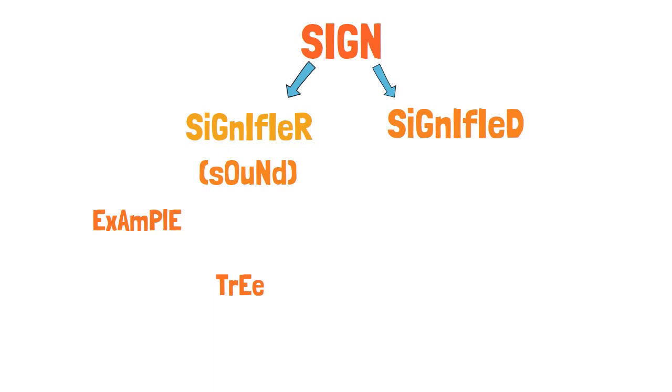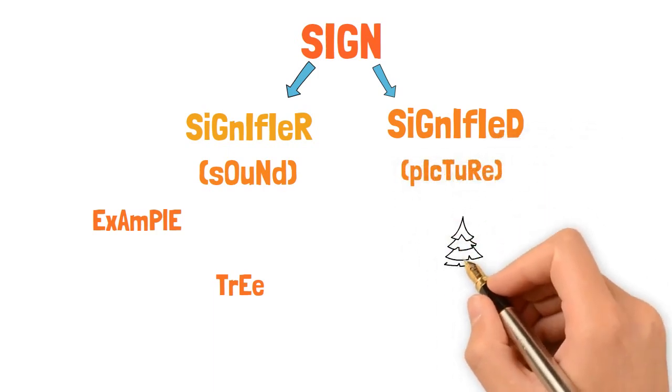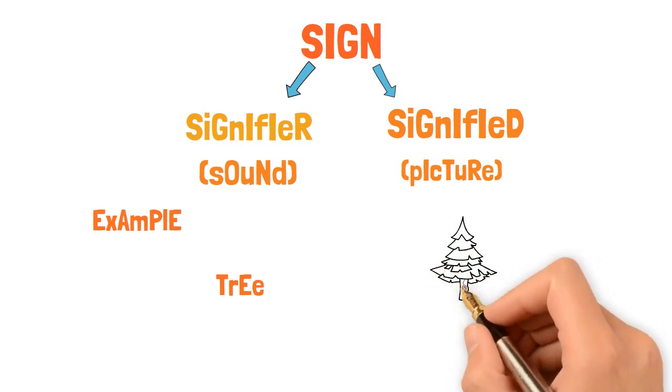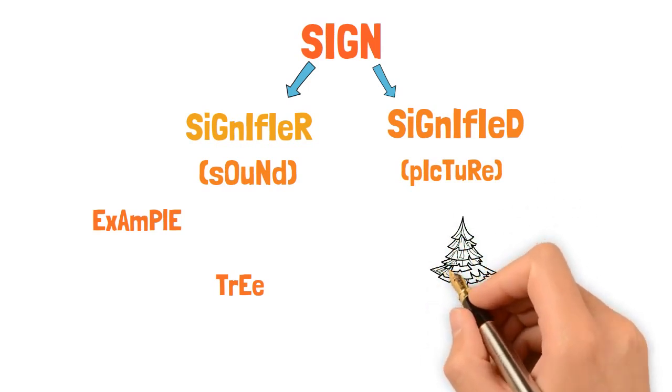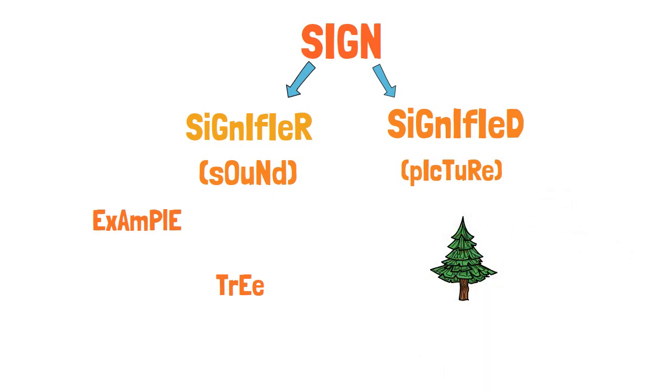But when we pronounce any kind of word it definitely carries a picture in our mind. For instance when I say tree, definitely it gives a mental picture to my mind. That mental picture is signified.